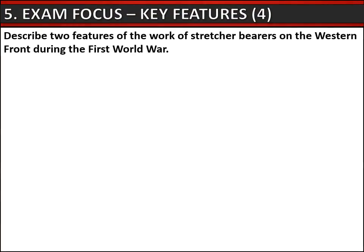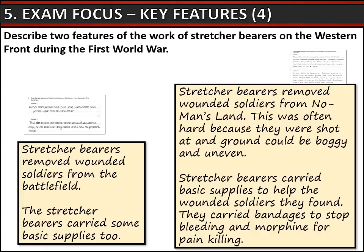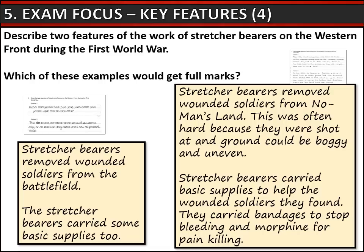Let's do some exam focus. Here is a key features question from a previous exam — it's worth four marks. Like all key features questions, it asks you to describe two features of something in particular, in this case two features of the work of stretcher bearers. On the screen are two answers by two separate exam candidates. Both candidates have given two correct features of the work of stretcher bearers. However, it is the second answer that would get four marks because they have supported each feature with specific information and detail.